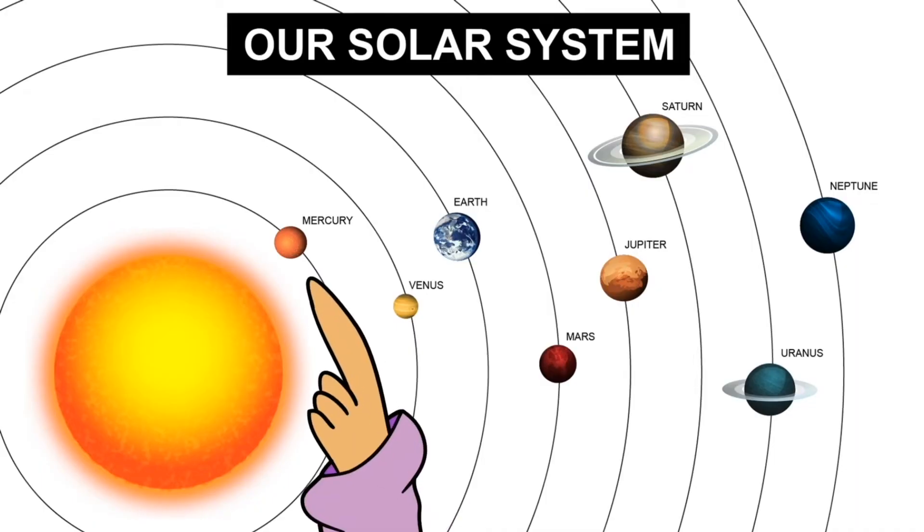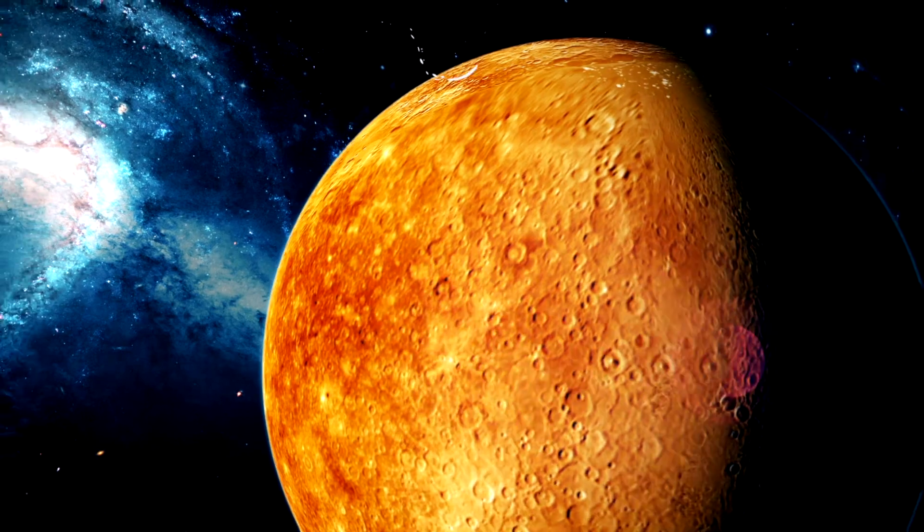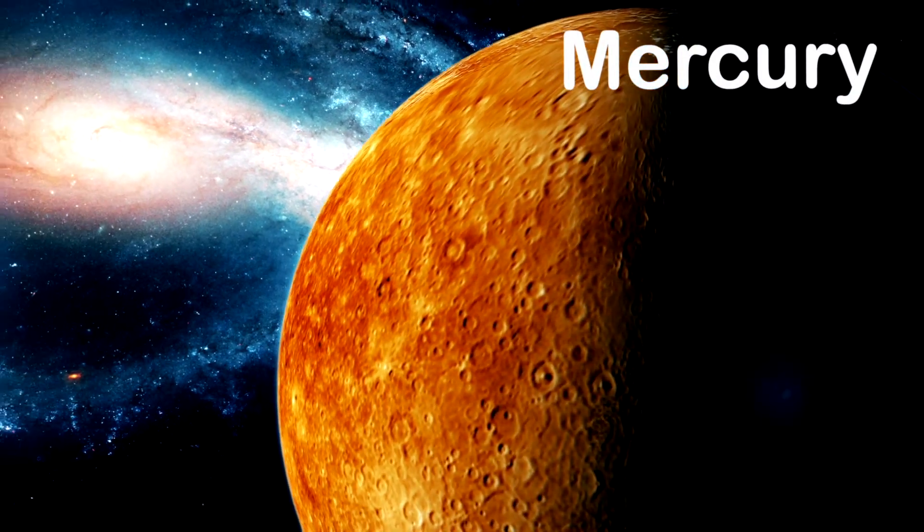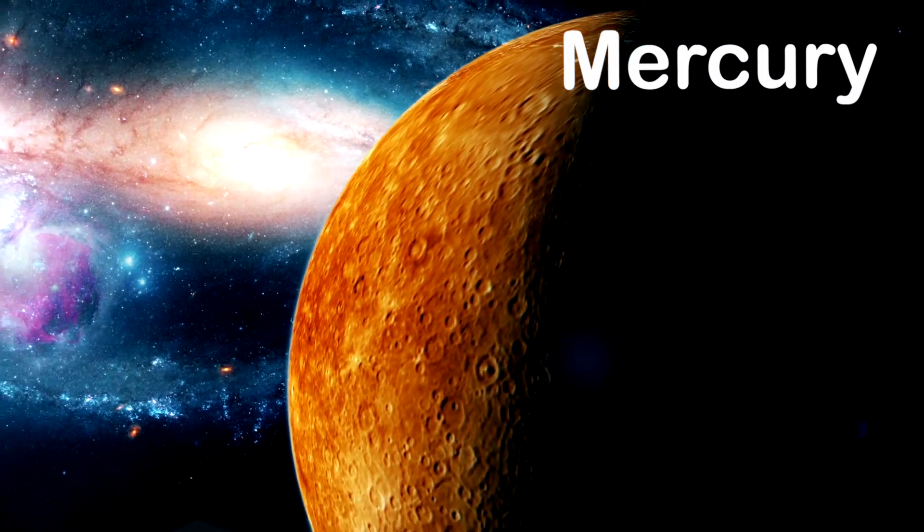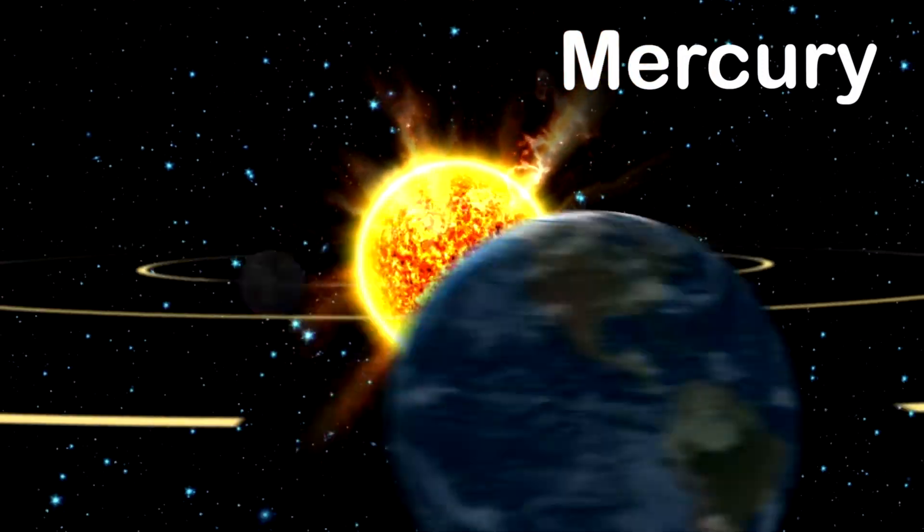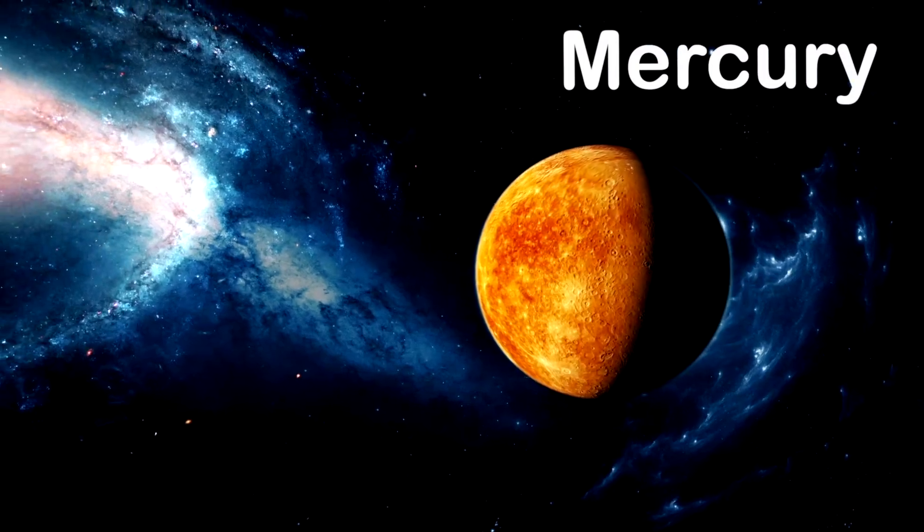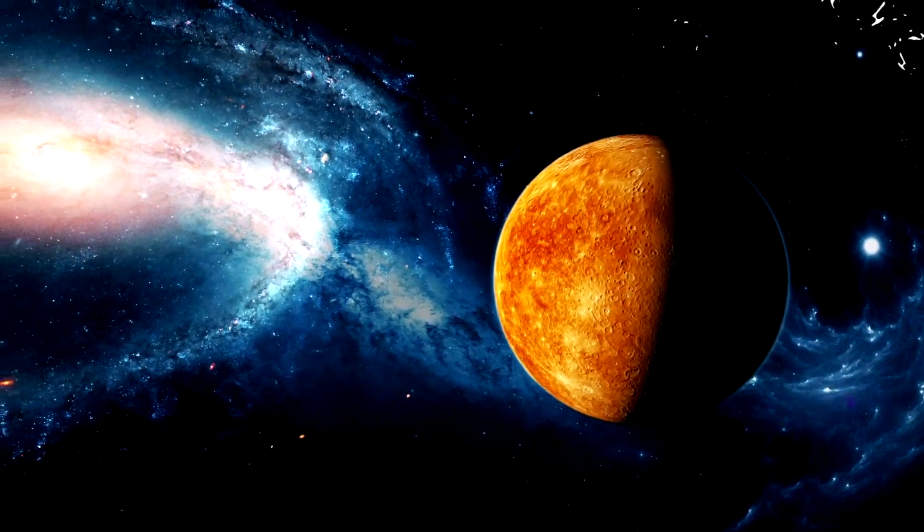The first planet in our solar system is Mercury. The planet Mercury is closest to the sun. It's the tiniest planet and the fastest one. It orbits round the sun every 88 days. And it gets pretty hot because of the sun's rays.